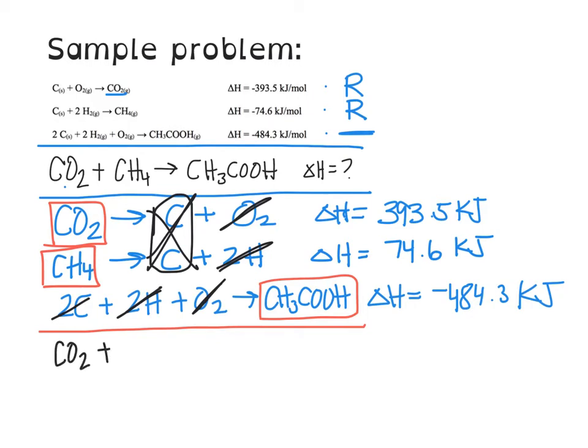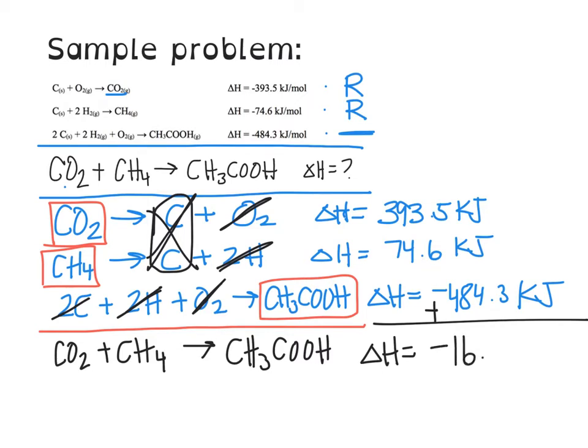So I am left with the only things that are remaining in these reactions are the ones that I have boxed up. So CO2 and CH4 make CH3COOH, and so if I now add up the resulting Delta H's I will get an end reaction Delta H for this equation that I was seeking. After you subtract and add according to the signs you end up getting a negative 16.2 kilojoules for this reaction, and that's how you do a Hess's Law problem.